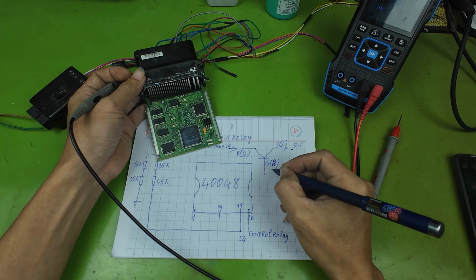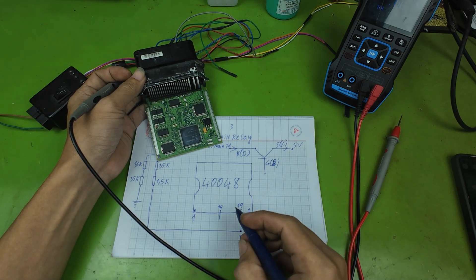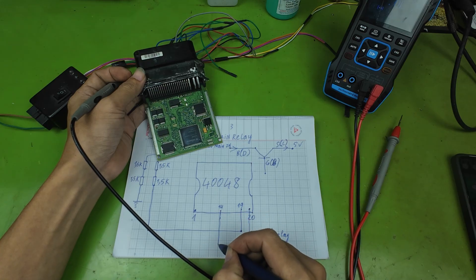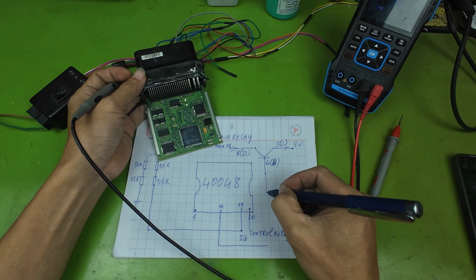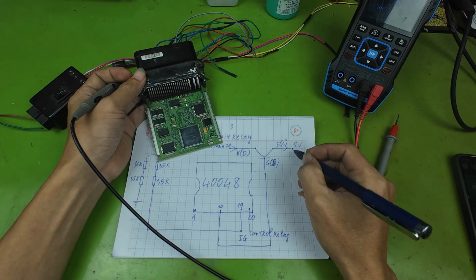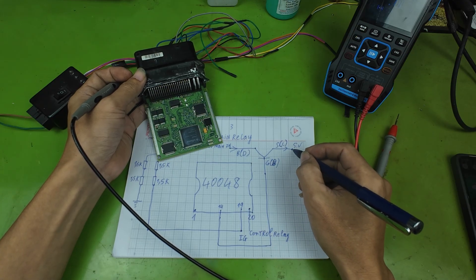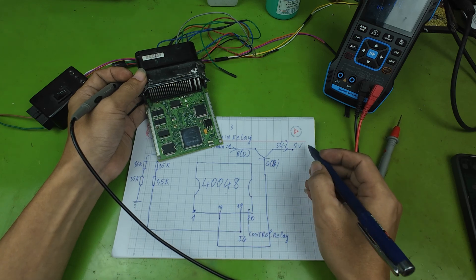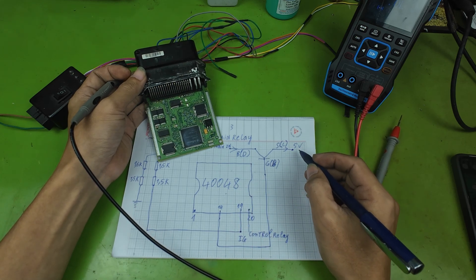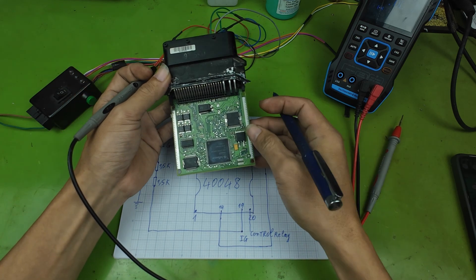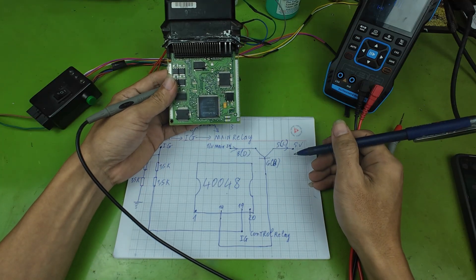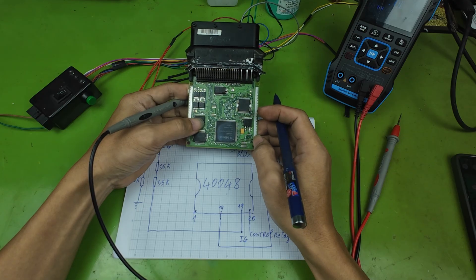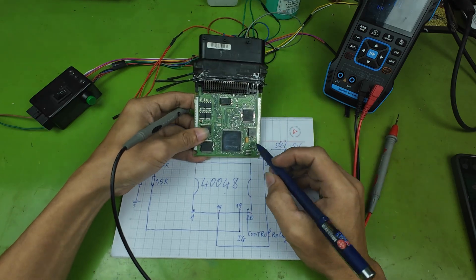The G gate pin receives the control signal from pin 14 of the IC. When I measured the gate voltage, it was close to 10V. Normally this means the output at the source pin should be close to that value, but in our circuit, the source pin stays at a stable 5V. This confirms that the circuit uses a 5V Zener diode to clamp and stabilize the output.